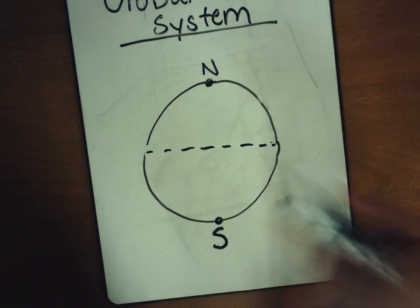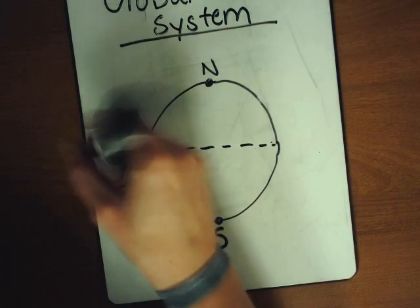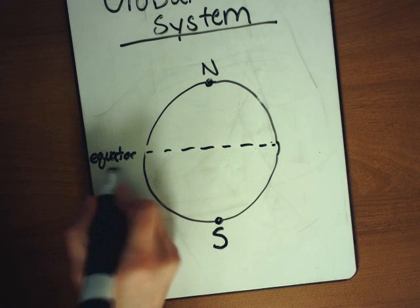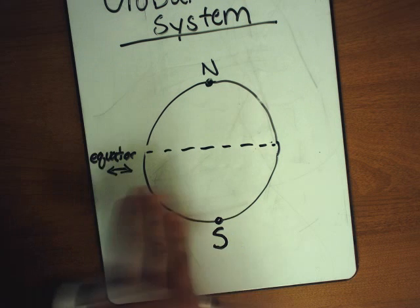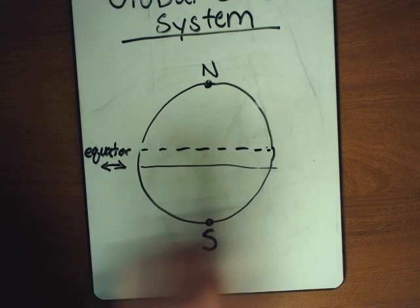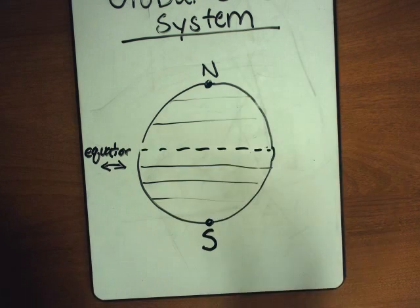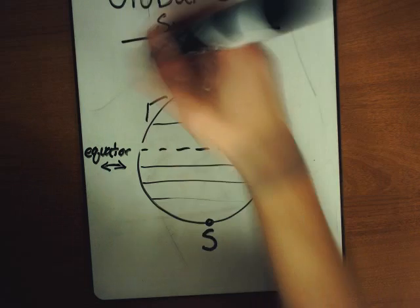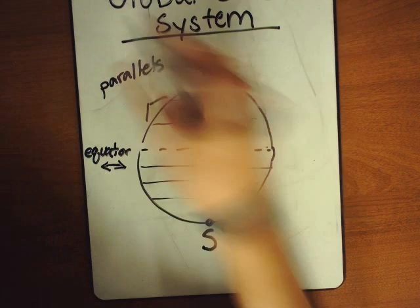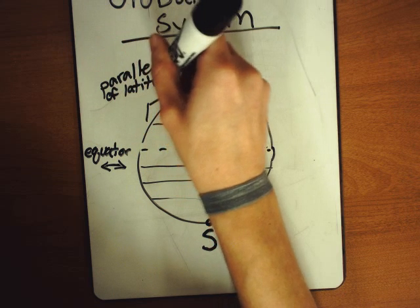So this is the main line of what we call latitude right there. It's zero degrees latitude. We call it the equator. So go ahead and write the word equator next to it. The equator runs from side to side right there. A line of latitude. So that's the main one, but we also have other parallels of latitude that we can draw, that we use to be able to find different things on the globe. So go ahead and label parallels of latitude. We call them parallels because you'll notice that they are parallel to the equator.